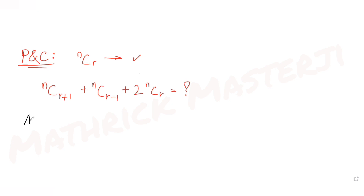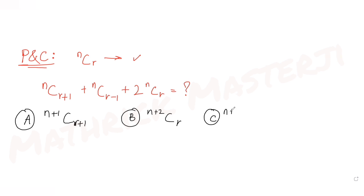The answer choices are: option A: n+1Cr+1, option B: n+2Cr, option C: n+2Cr+1, and option D: n+1Cr. We need to figure out which one is the correct answer for this entire expression.